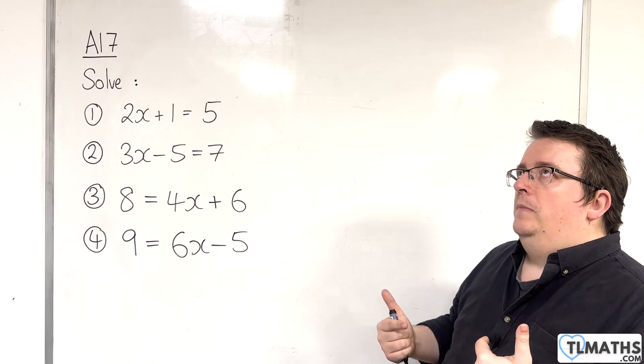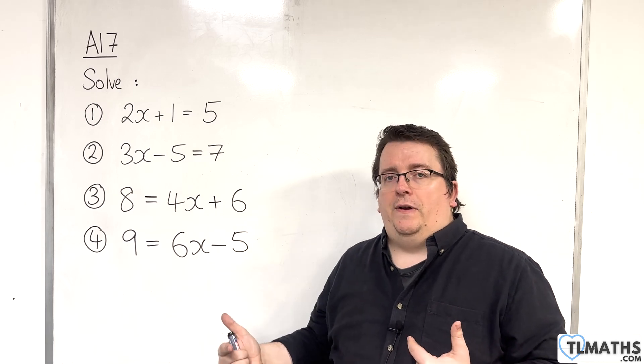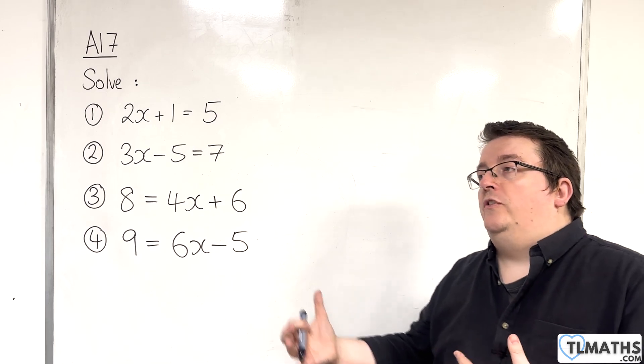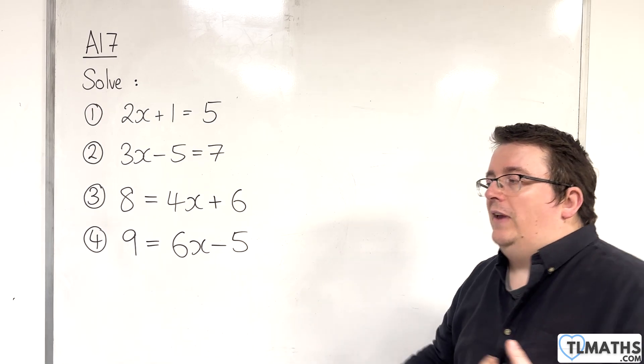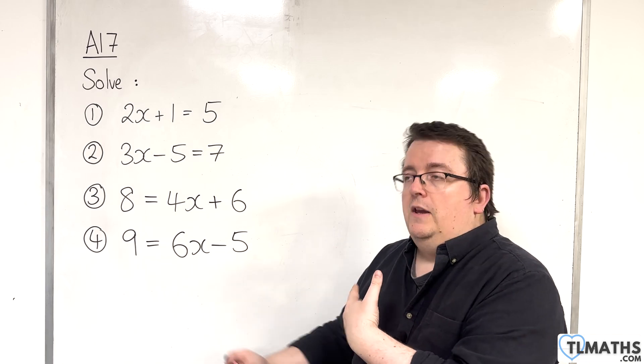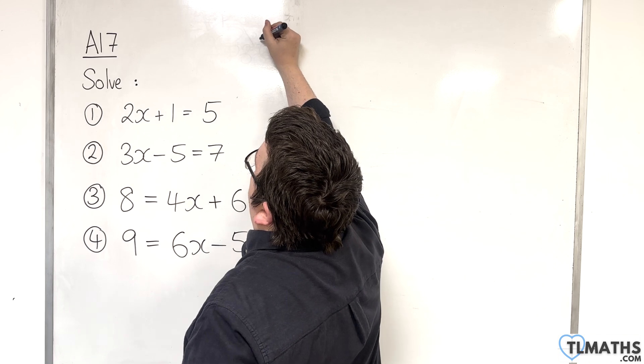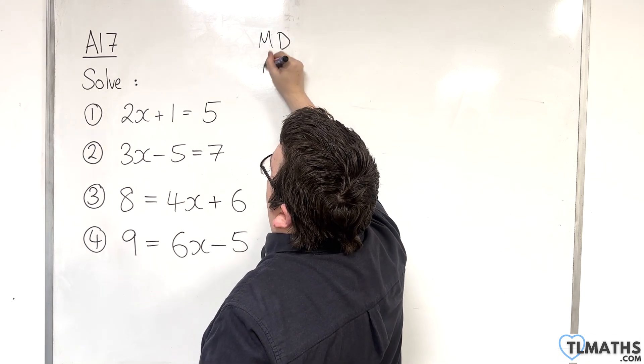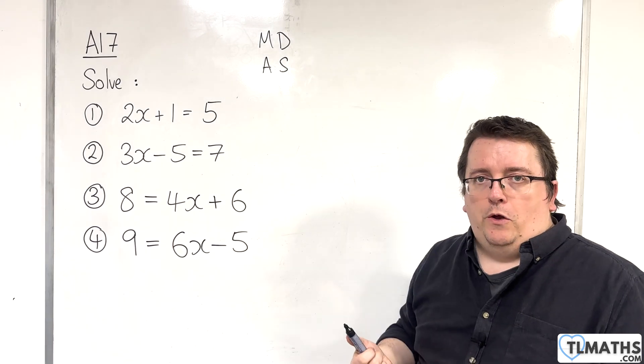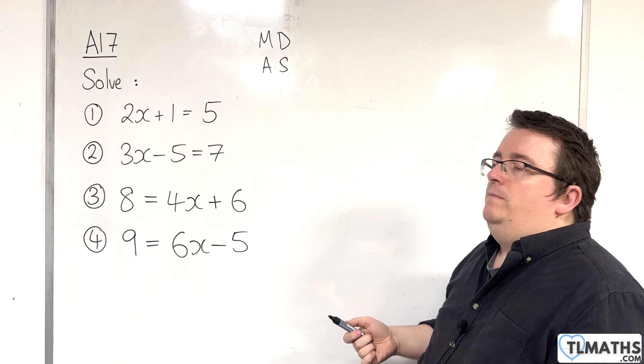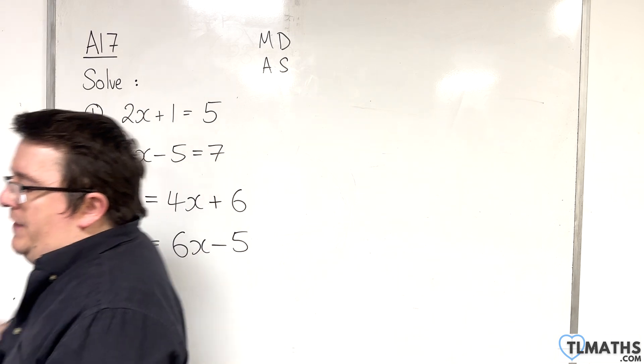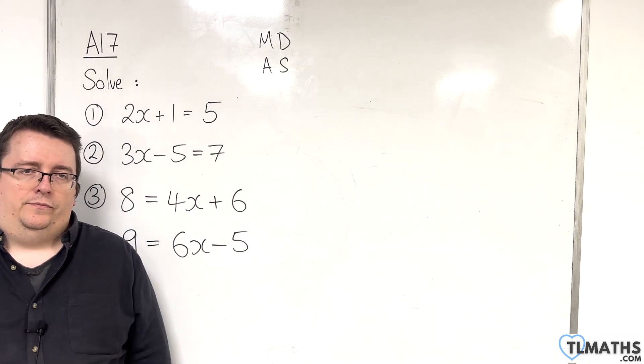So, BIDMAS would tell you that we need to do multiplications first and then additions or multiplications and then subtractions or divisions and then additions or divisions and then subtractions. But either way, with BIDMAS, the multiplication and then additions or subtractions, OK, we deal with these first, then we deal with those. When you're unravelling an equation, it's the opposite way around. Deal with the additions and subtractions first and then deal with the multiplications and divisions. OK.